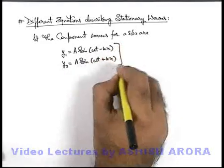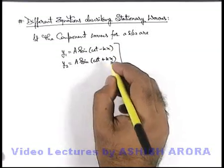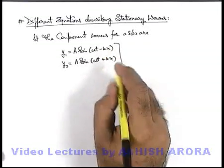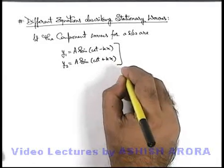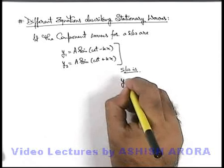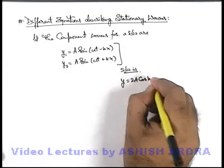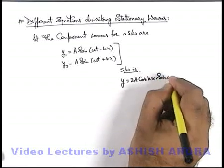When we combine these equations, or when these two simple harmonic waves superpose on a region of medium particles, the resulting equation for stationary wave is, this can be given as, which we already studied, it is 2A cos(kx) sin(ωt).